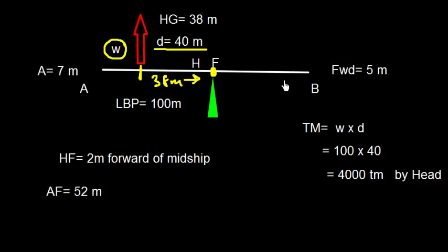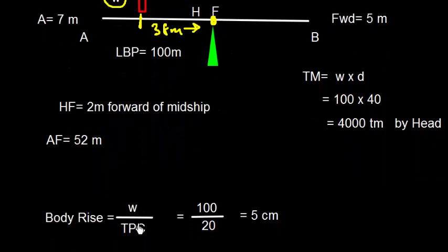If I discharge something from aft, the ship will trim by head. Now, there will be a bodily rise because we discharged something. Instead of discharging from this location, if I discharge from the center of flotation, the ship will rise bodily. This bodily rise is given by W/TPC. With W = 100 tons and TPC = 20, the bodily rise is 5 centimeters.